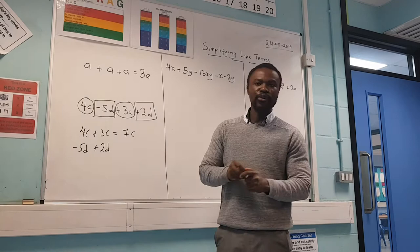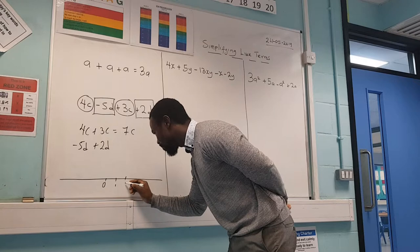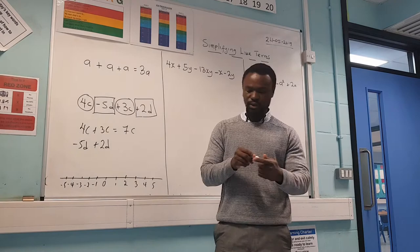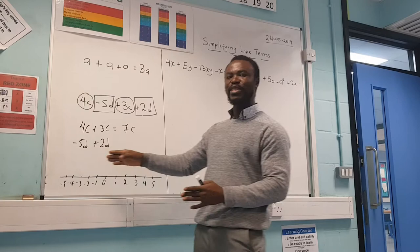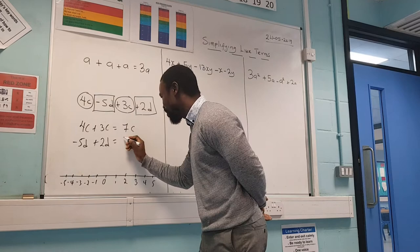If you are confused with positive and negative numbers, just draw your number line. I'm on minus five and I'm going to move two to the right because it's positive — you move to the right side. Starting at minus five, count two to the right: minus four, minus three. So that gives minus 3D.